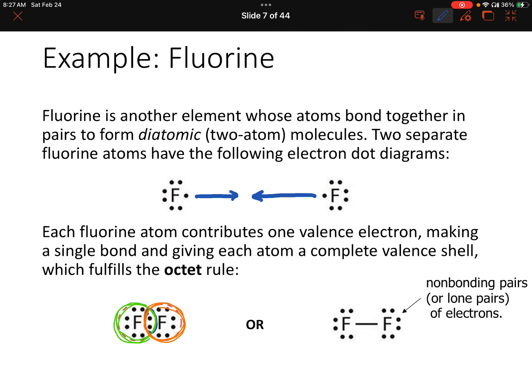We could also represent those two shared electrons as a line or bond — either way, we're representing a covalent bond. The fluorine molecule differs from the hydrogen molecule because each fluorine also has six other electrons surrounding it. Those six electrons in pairs around each fluorine are called non-bonding pairs or lone pairs of electrons. We do not draw those as lines because they're not forming a bond — we keep those as dots in Lewis diagrams.